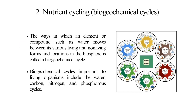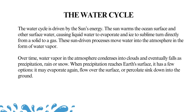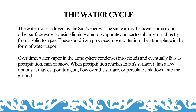Nutrients cycling — biogeochemical cycles: the ways in which an element or compound such as water moves between its various living and non-living forms and locations in the biosphere is called a biogeochemical cycle. Biogeochemical cycles important to living organisms include the water, carbon, nitrogen, and phosphorus cycles. The water cycle is driven by the sun's energy.